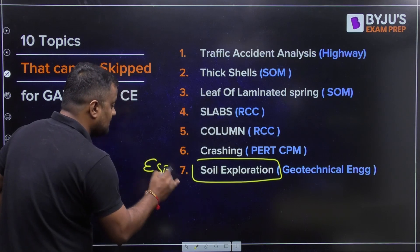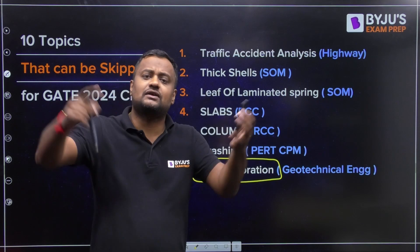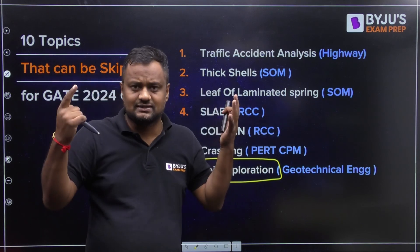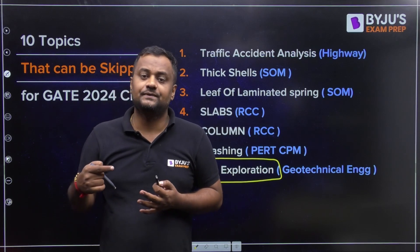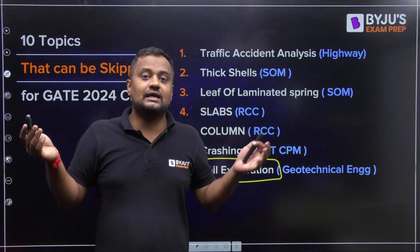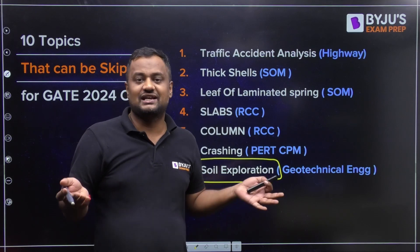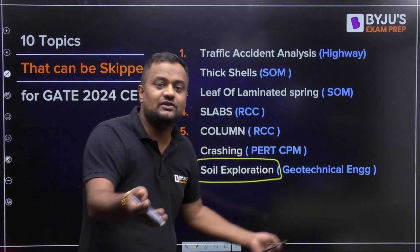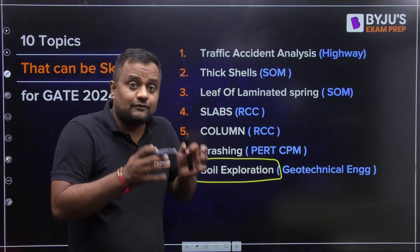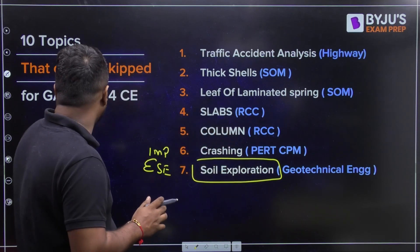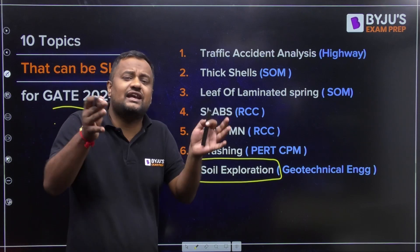The seventh topic is soil exploration. It is very important for Engineering Services — in 2023 ESE, questions from geotextiles, geostabilization, and soil exploration appeared after every second question in soil mechanics. But for GATE, soil exploration only asks about area ratio and length recovery ratio, or sometimes nothing at all.